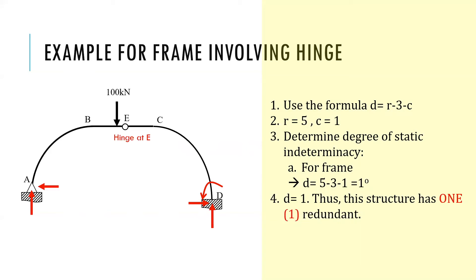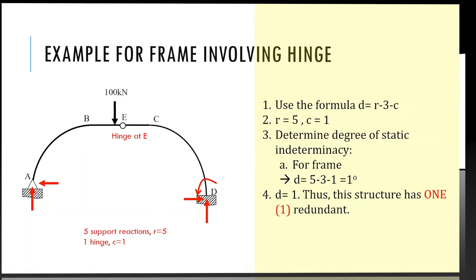How about if the arch has a hinge at E? This arch has five support reactions, and there is one hinge in the system, so c is equal to 1. In this case, we get d equal to 1 degree. This indicates that this arch has one redundant.